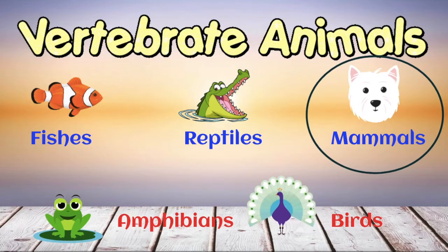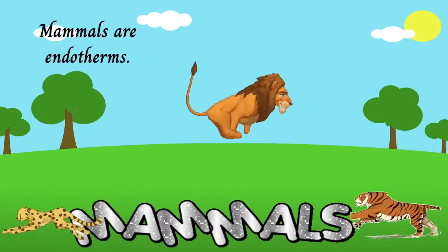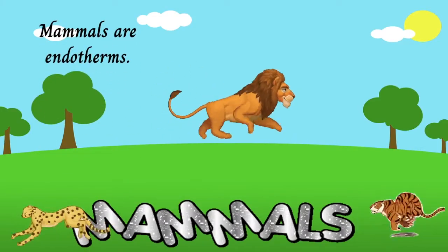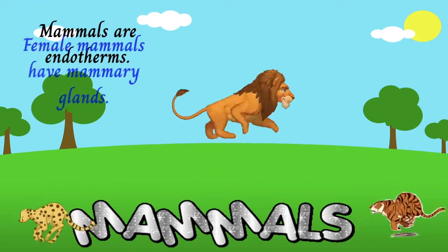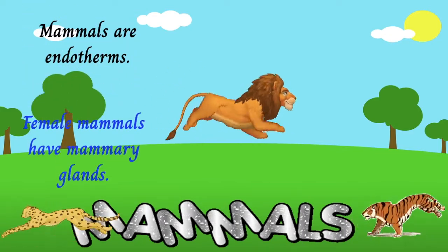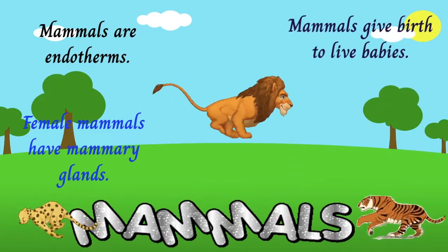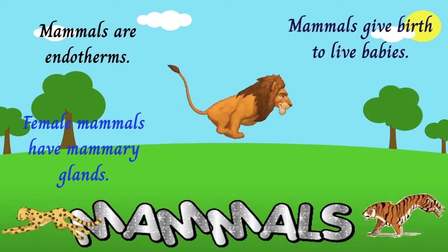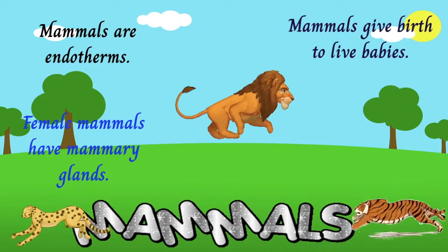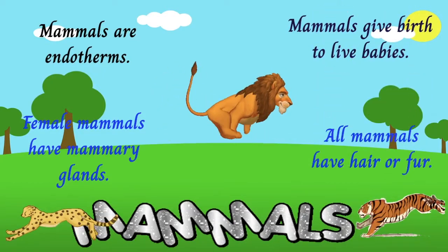Now let's go to mammals. Mammals are endotherms, meaning they can maintain their body temperature. Female mammals have mammary glands which produce milk for their young ones. All mammals give birth to live babies, except the duck-billed platypus. All mammals have hair or fur.